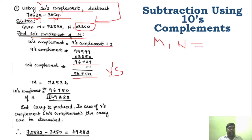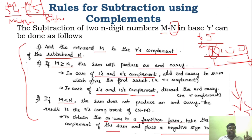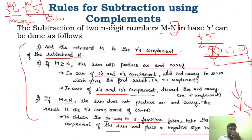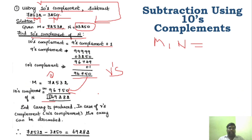The ten's complement is nothing but the R's complement. Now the first step: add the minuend M to the R's complement of the subtrahend. After adding, we get a carry. Since the question uses ten's complement, carry is produced — and by the rule, for 2's or 10's complement, we just discard the carry. So we discard it, and the remaining digits are the answer.